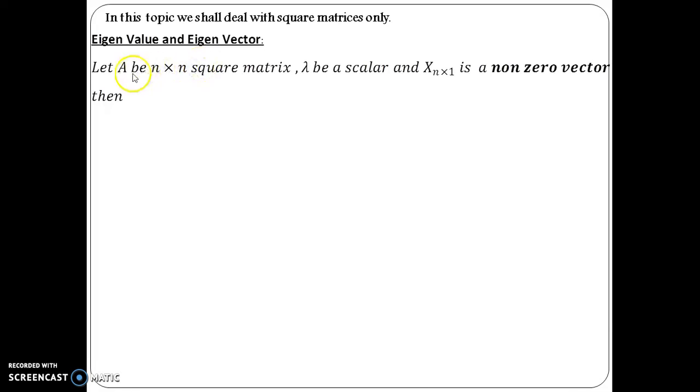Now, we will be beginning with the theory of the topic we are going to discuss: eigenvalues and eigenvectors. The first and foremost thing is that we will be only dealing with square matrices. In this topic, we are not going to talk about rectangular matrices. So, now consider a matrix A which is an n×n square matrix and λ is a scalar and X is a column vector which is a non-zero vector.